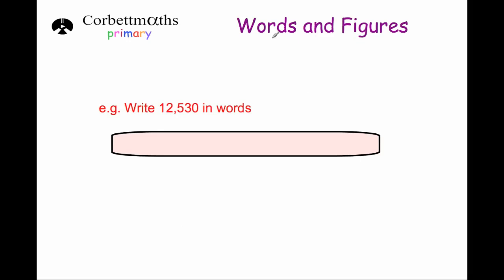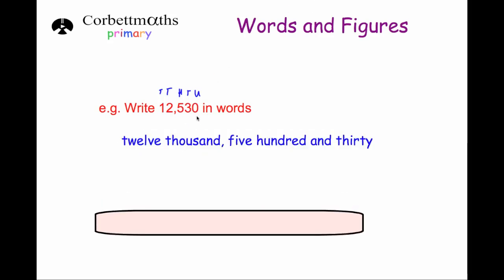We've been asked to write this number in words. So we've got the tens of thousands, and we've got the thousands, the hundreds, the tens, and the units. So it's got a one in the ten thousands and a two in the thousands. So altogether that will make twelve thousand. Then we've got five hundred and thirty. So the number will be twelve thousand, five hundred and thirty.